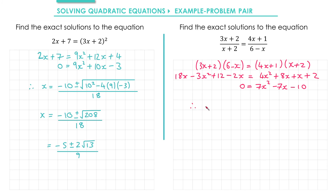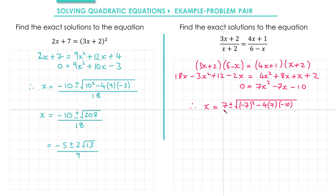Applying the quadratic formula: x equals minus b — b is negative 7 so that gives us positive 7 — plus or minus the square root of b squared, which is negative 7 squared, minus 4 times a (which is 7) times c (which is negative 10), all divided by 2a which is 14. Tidying up: minus 7 squared is 49. Since we have a minus times a minus we add: 4 times 7 is 28, times 10 is 280; adding 280 to 49 gives us 329.